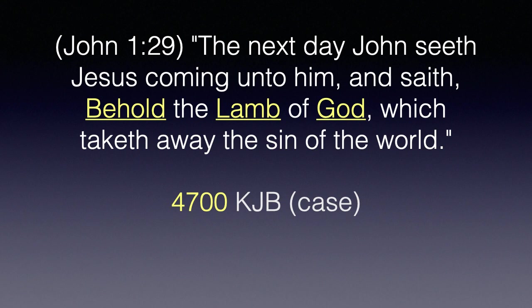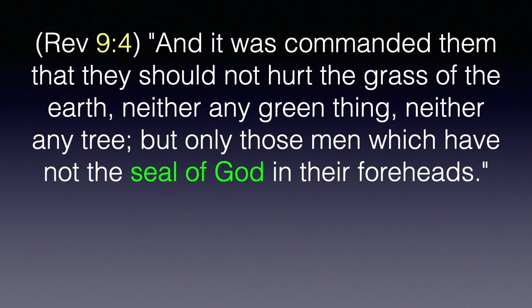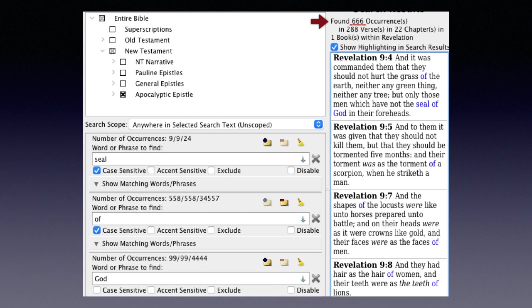Revelation 9:4: 'And it was commanded them that they should not hurt the grass of the earth, neither any green thing, neither any tree, but only those men which have not the seal of God in their foreheads.' Revelation 9:4 — the number 94 is a multiple of 47. The word 'seal' (case sensitive as found in Revelation 9:4), the word 'of' (case sensitive), and 'God' combined total 666 in the book of Revelation. This King James code pattern can be examined within Revelation, Matthew, Genesis, the Old or New Testament, or the Bible as a whole. It's a profound book — words can't describe. Anytime I study it, I am in awe of God's handiwork.